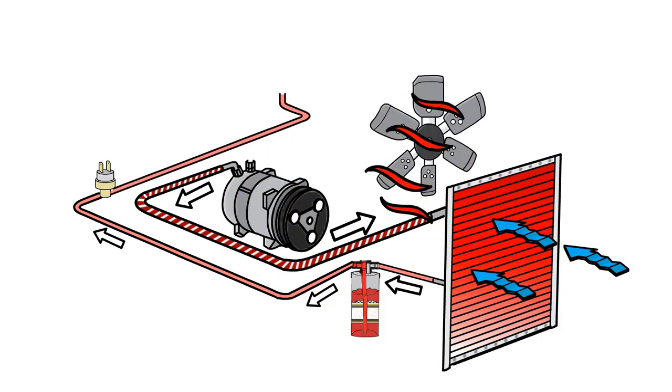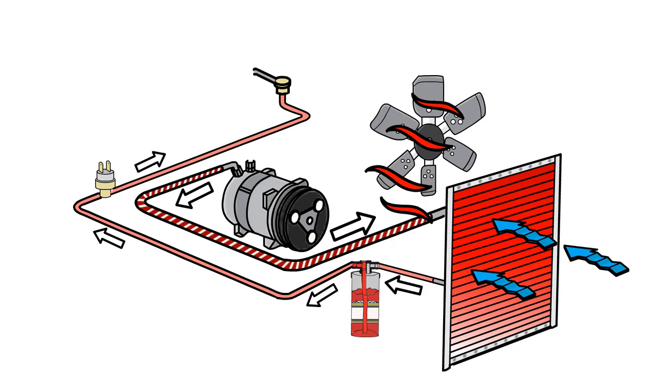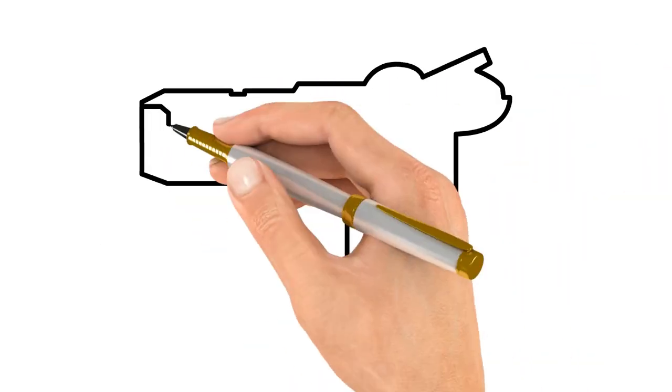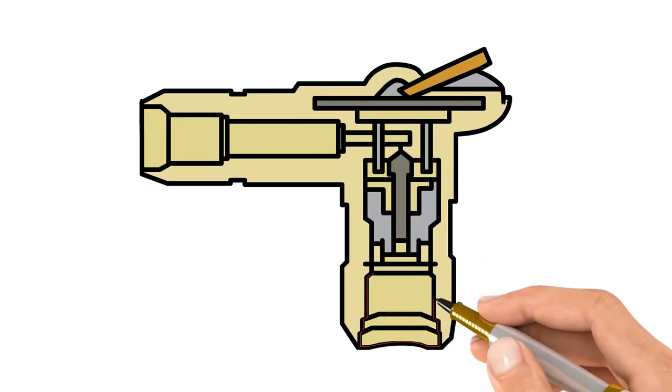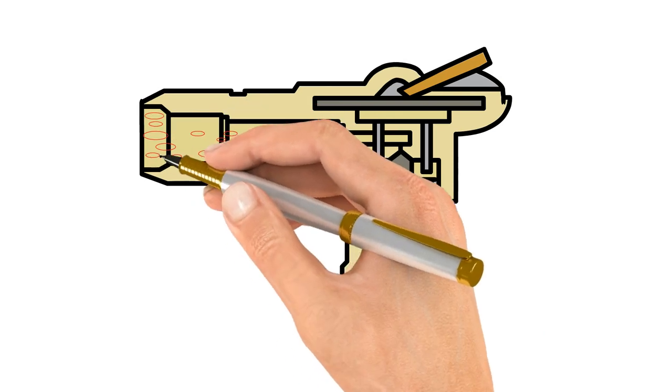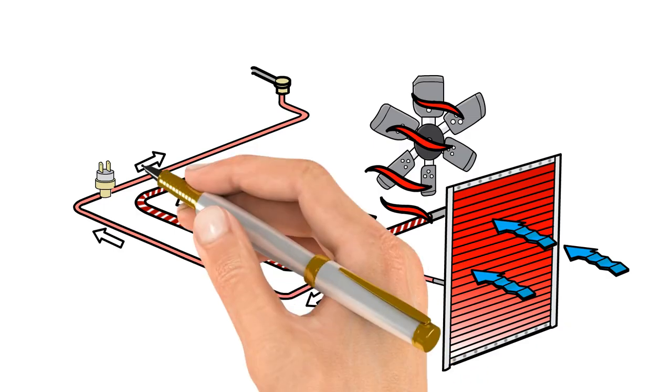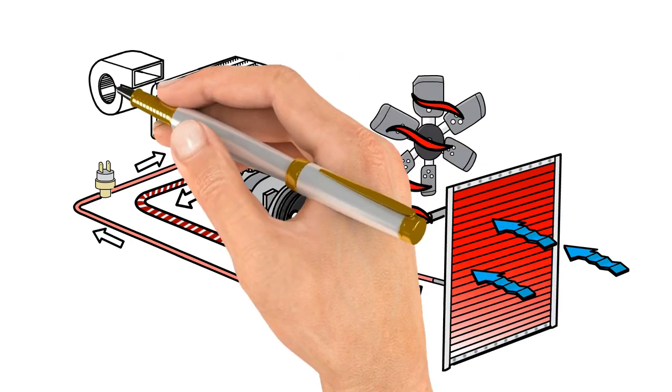We're going to go now into the expansion valve and the expansion valve is at the inlet of your evaporator coil. It basically regulates the amount of refrigerant going into your AC coil, number one. And the second thing it does is it atomizes that high pressure liquid refrigerant into droplets. And then these droplets, as they go through your coil.